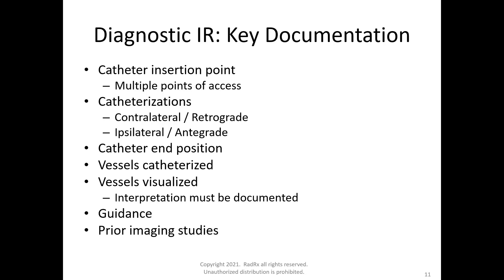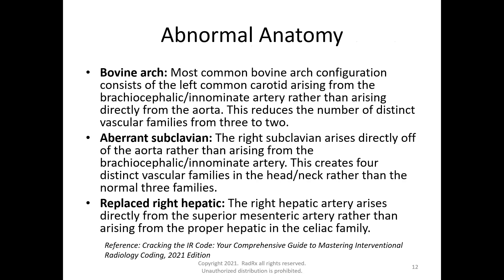In order to assign an imaging code, an interpretation has to be documented. You'll also note any guidance used to perform the procedure and any prior imaging studies mentioned in the interventional radiology report. That becomes significant when coding for therapeutic interventions such as angioplasty, stent, and atherectomy. Abnormal anatomy and certain conditions must be present in order to code for repeat diagnostic studies, but that is more advanced and not covered today.